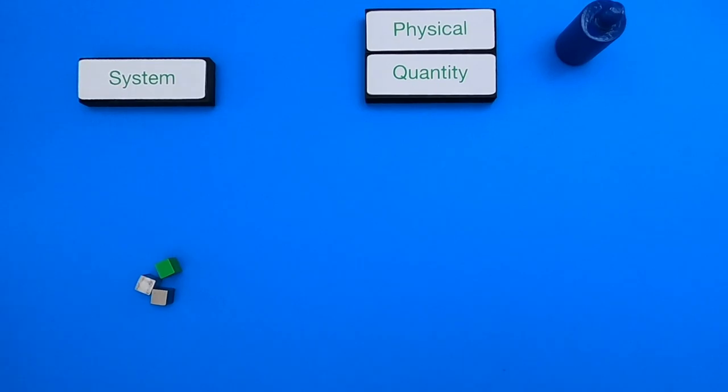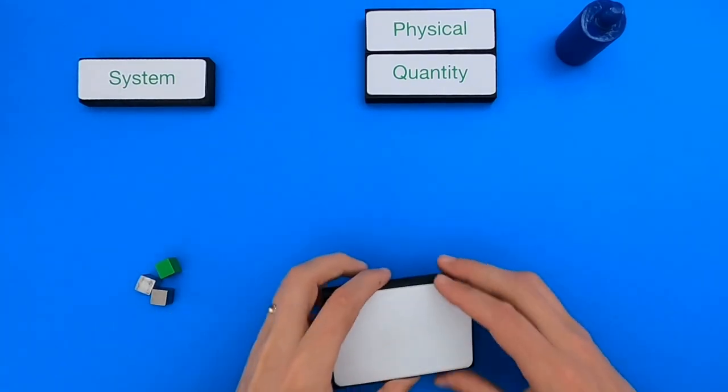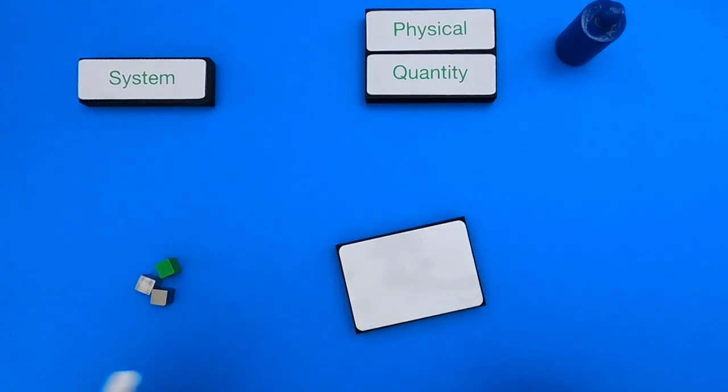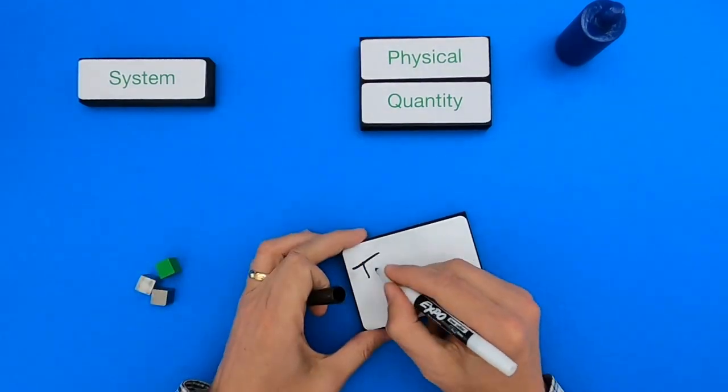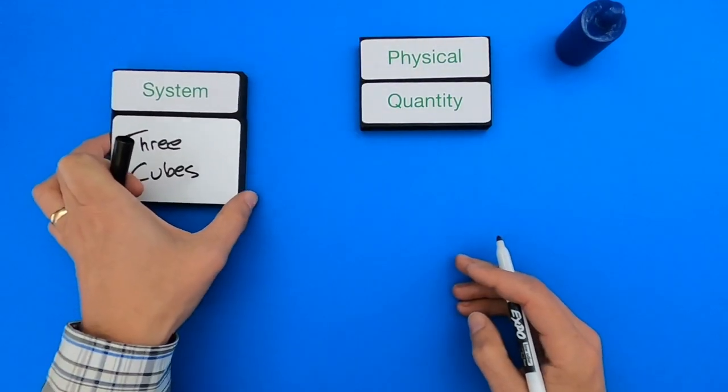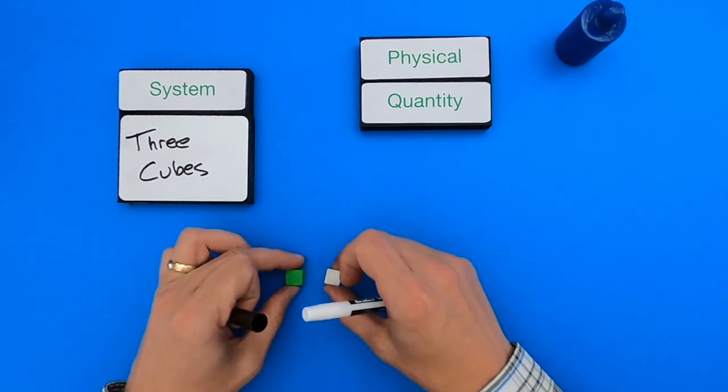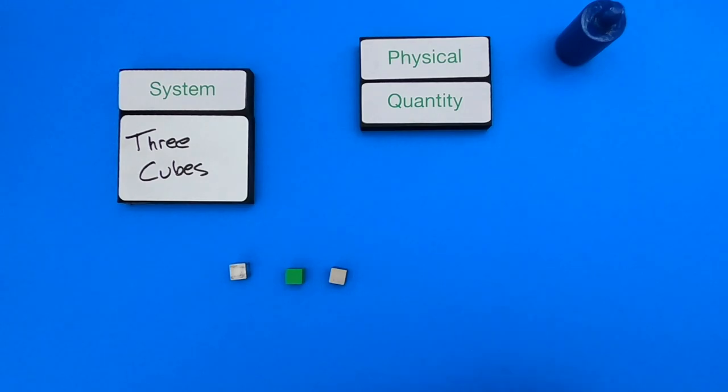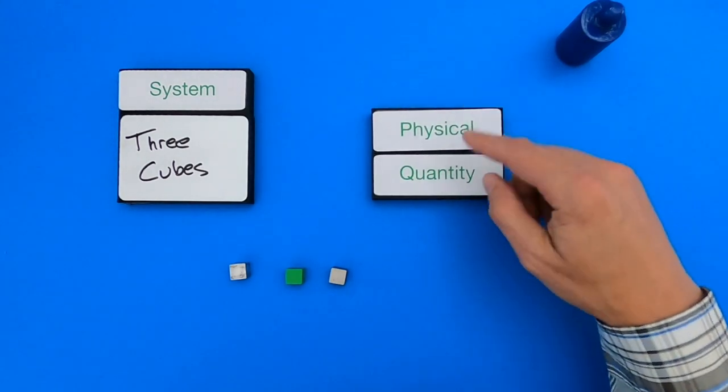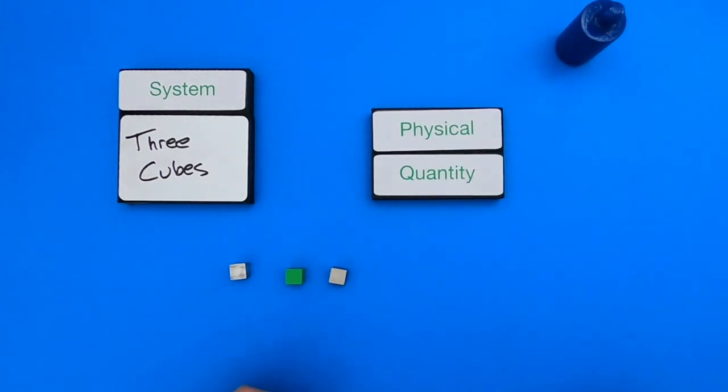So the first thing we always want to do is define what are the objects, or what is the system that we're going to investigate. So these three cubes, we'll call this cube one, cube two, and cube three, are going to be the system that I'm going to investigate, and I'm going to measure some of their physical quantities. So let me list out all the objects first.